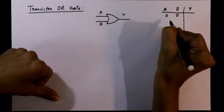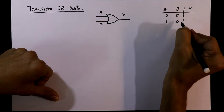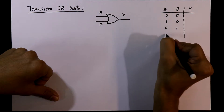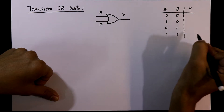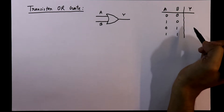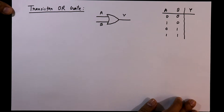The four conditions are: when both are 0, A=1 and B=0, A=0 and B=1, and when both are 1. Now we have to find out the output for each condition.